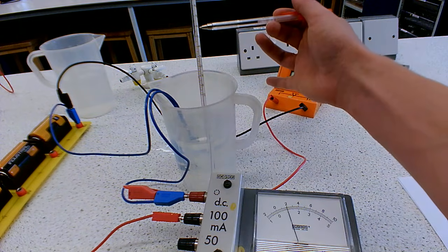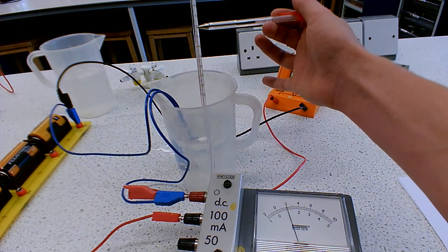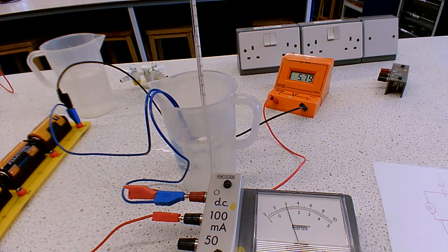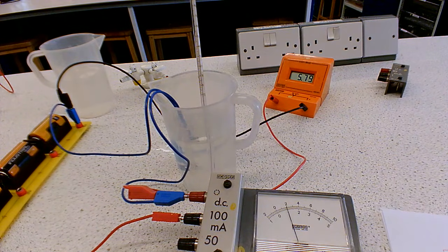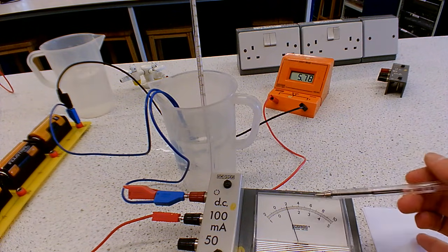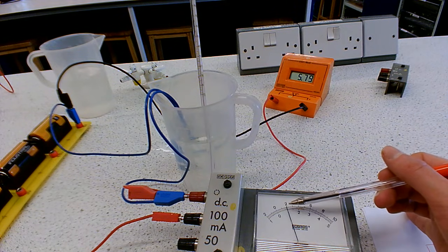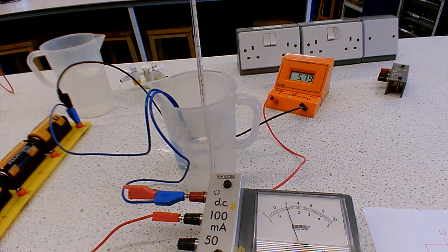So our temperature getting down at eye level, that is 57 degrees, so 57 degrees. Our current, that is 2 on the top scale, so that's 20 milliamps,